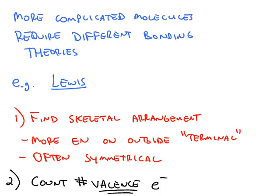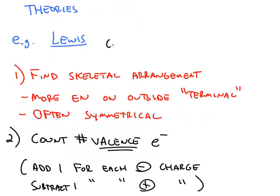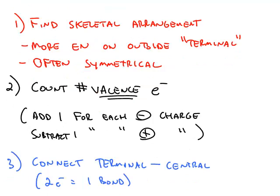The examples we've seen so far have been relatively simple molecules. As the molecules become more complicated, we need more bonding theories to explain how the bonding actually occurs. The first one we're going to look at is called the Lewis structure. The Lewis structure is for covalently bonded chemicals, and it involves a series of steps.